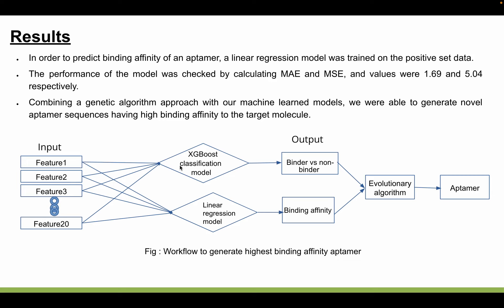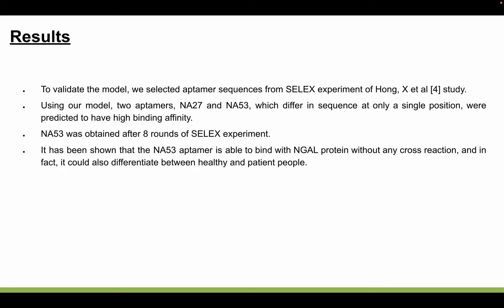As shown in this workflow, the top 20 features were selected to train both the classification model and the regression model. The XGBoost classification model was able to identify reads from binders versus non-binders, and the linear regression model was able to predict binding affinity. Using both models combined with a genetic algorithm approach, we generated novel aptamer sequences.